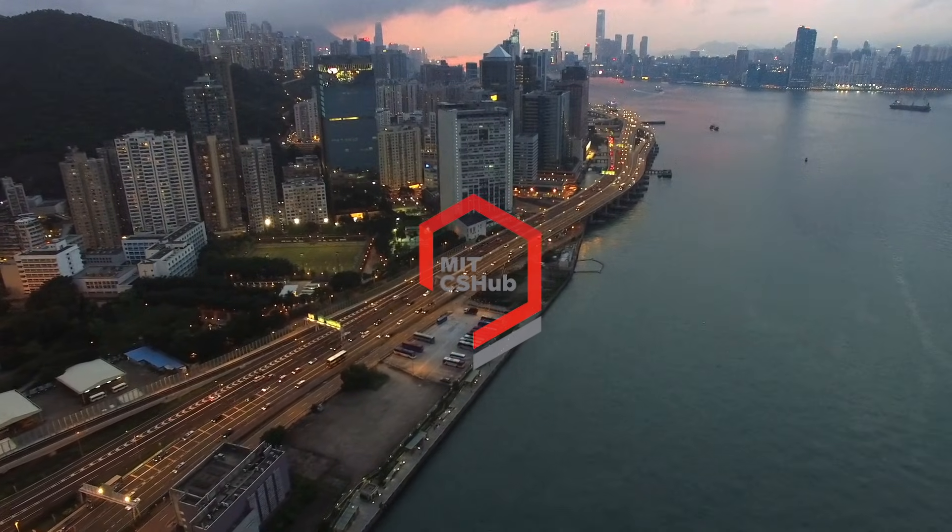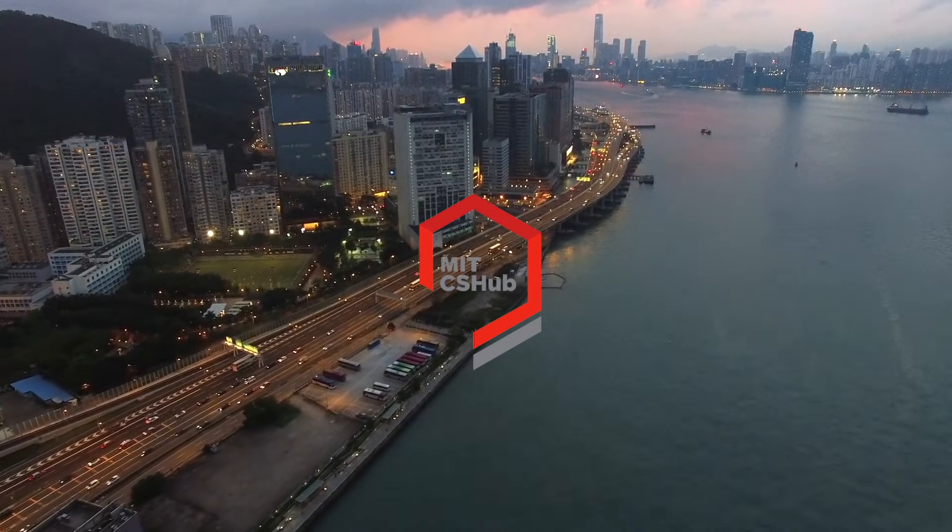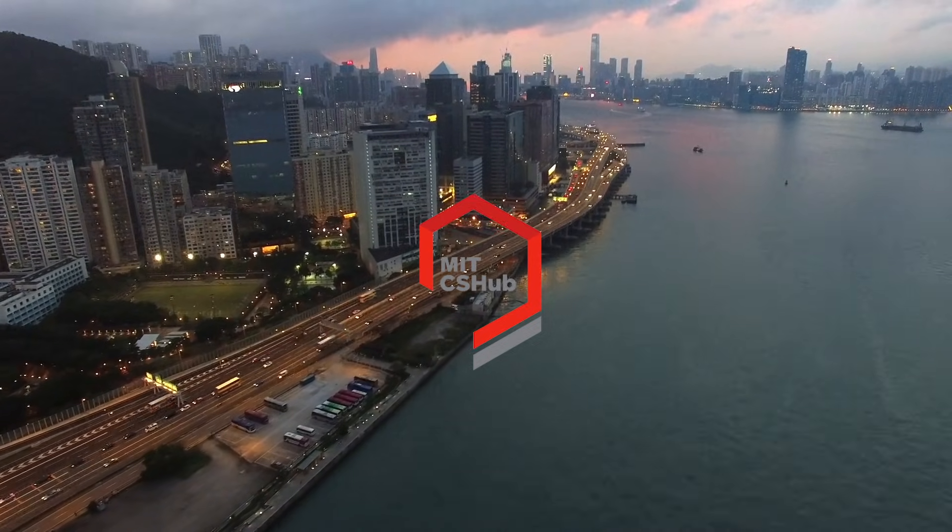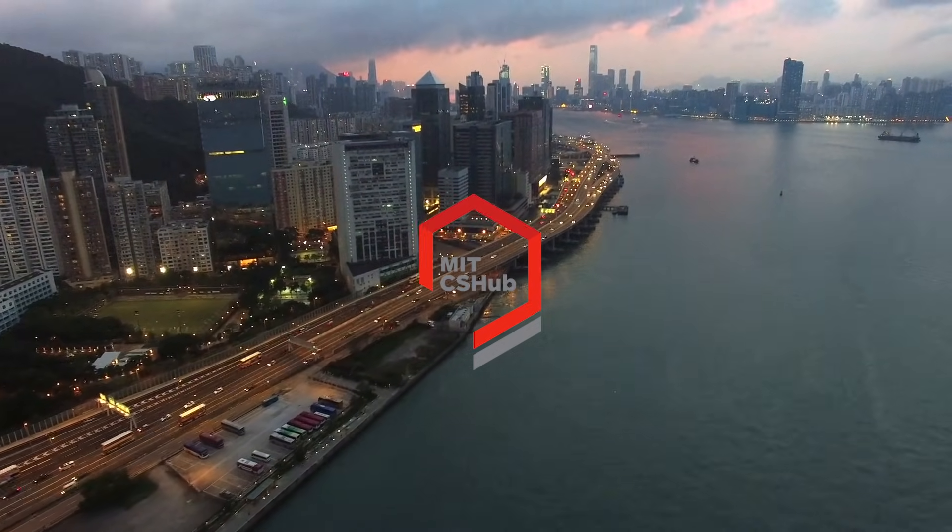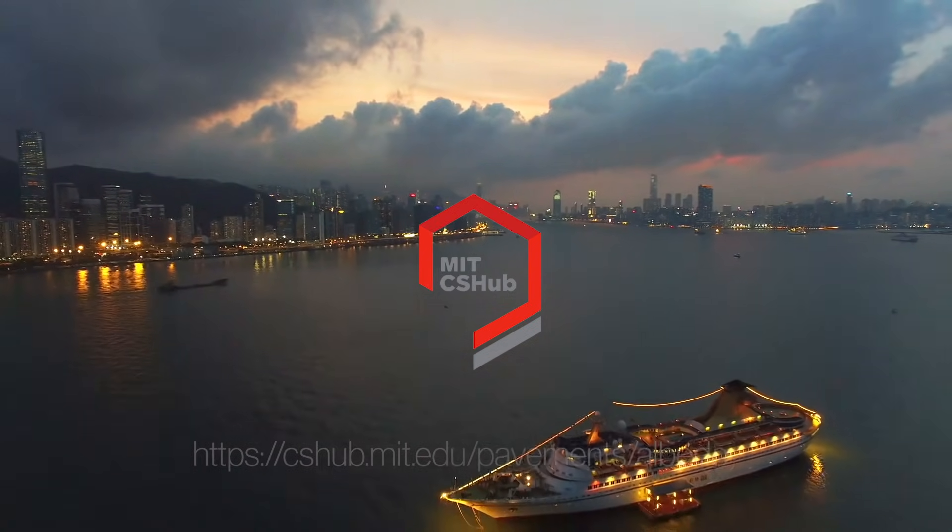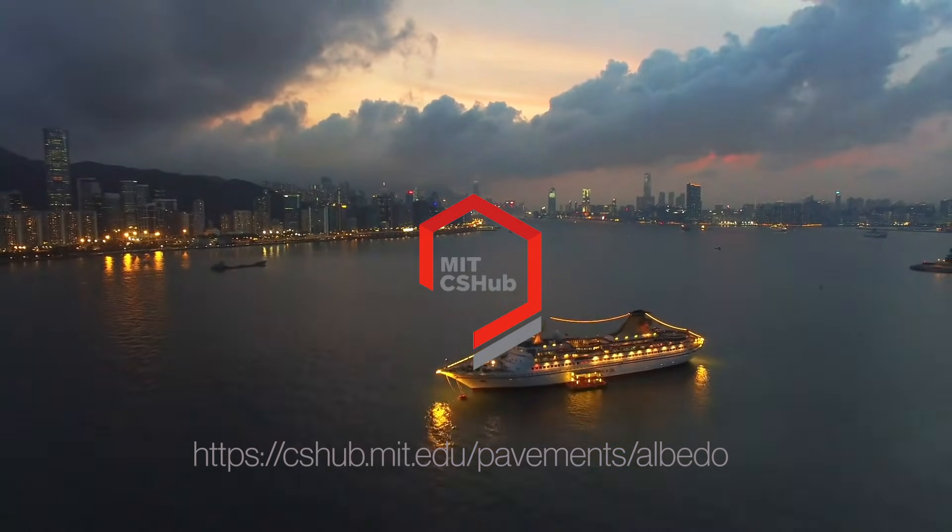As climate change accelerates over the coming decades, we will need to think creatively to alleviate the worst of its effects. Playing with the surface albedo of our cities and highways may prove to be one such creative strategy. To learn more about albedo and albedo research being conducted at MIT, go to cshub.mit.edu/pavements/albedo.